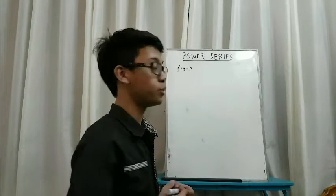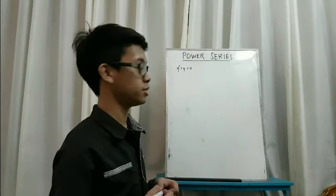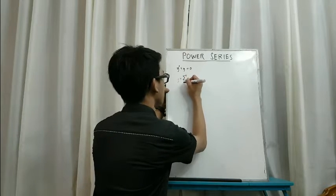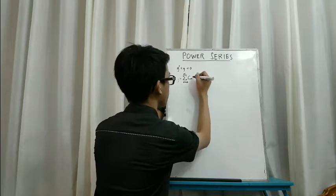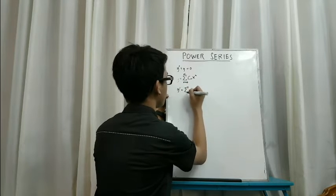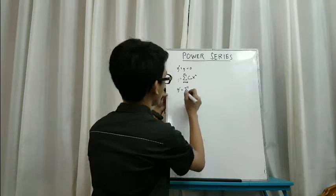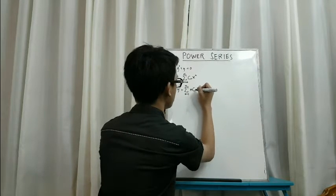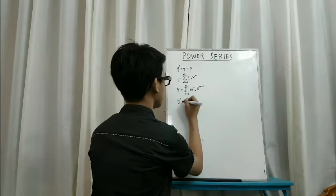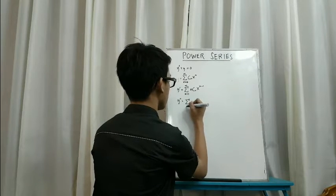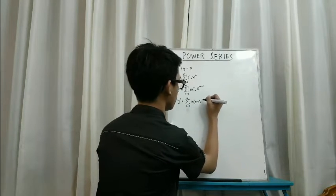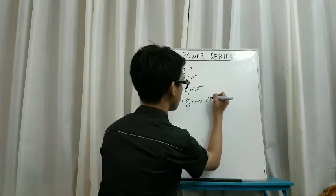Let's start working with this equation: y double prime plus y is equal to zero. So y can be represented as the summation from n equals zero to infinity of c sub n times x raised to n. Using the power rule, y prime equals the summation from n equals 1 to infinity of n times c sub n times x raised to n minus 1. And y double prime equals the summation from n equals 2 to infinity of n times n minus 1 times c sub n times x raised to n minus 2.